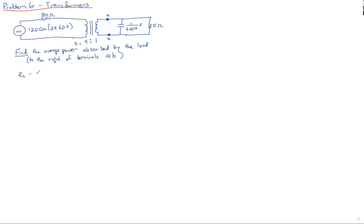Let's find the impedance of the capacitor, which is 1/jωC. Here ω = 2π×60, and our capacitor is 1/(600π). The π's cancel and we end up with 1/(j×1/5), which equals −j5, because 1/j is −j and 1/(1/5) is 5. So the impedance of the capacitor is −j5Ω.